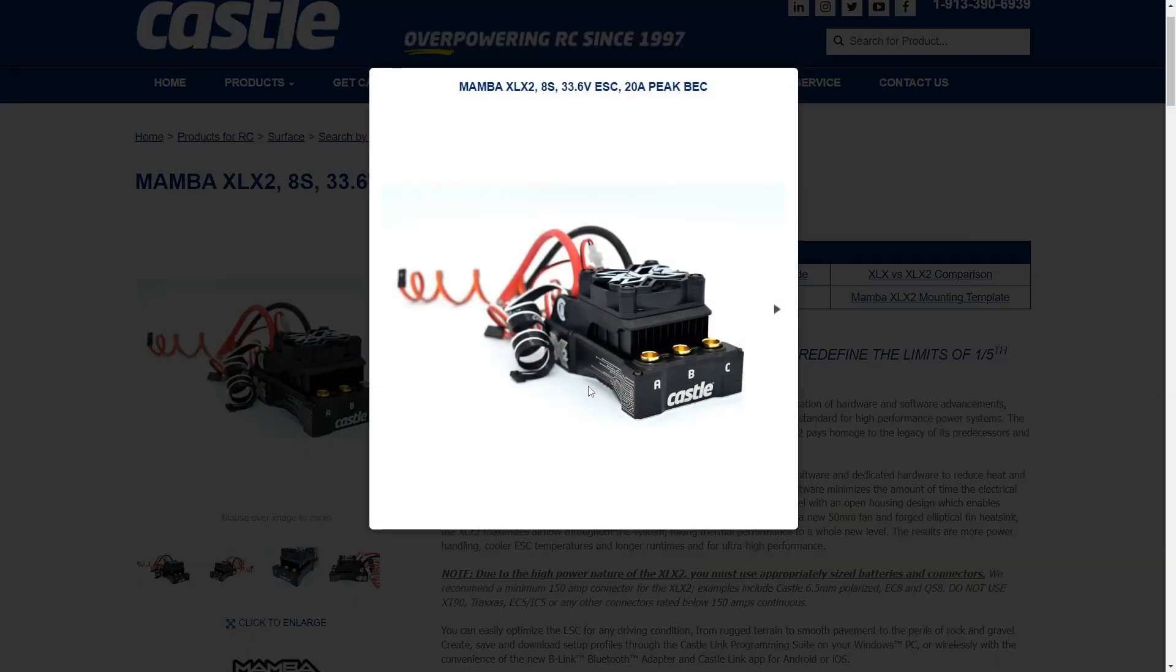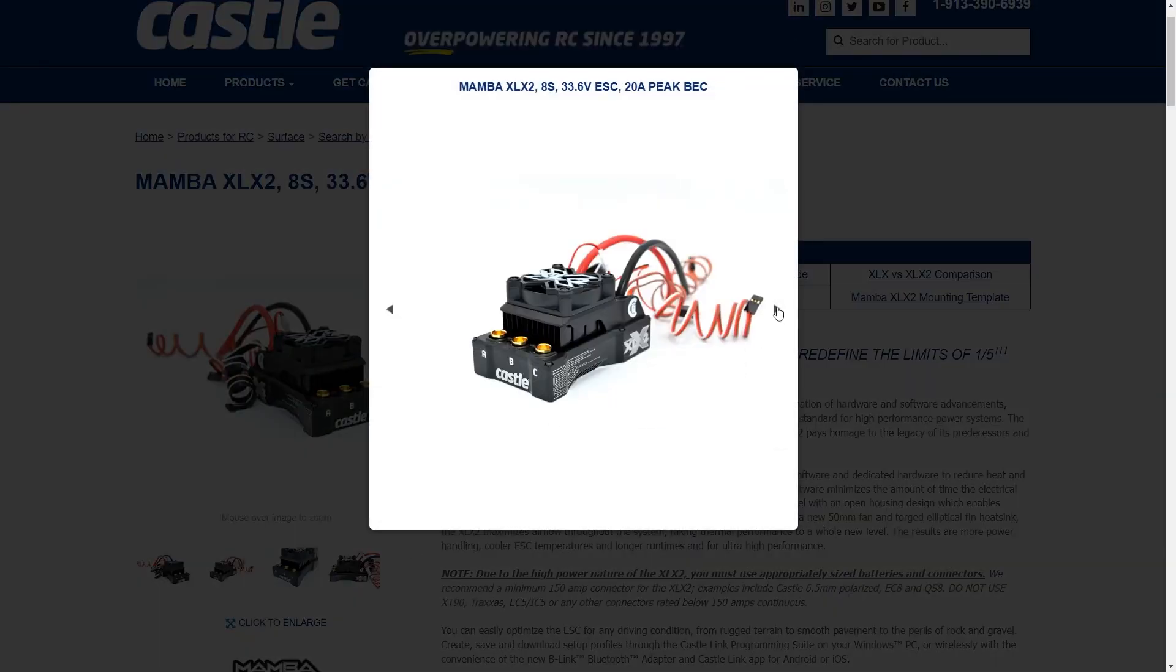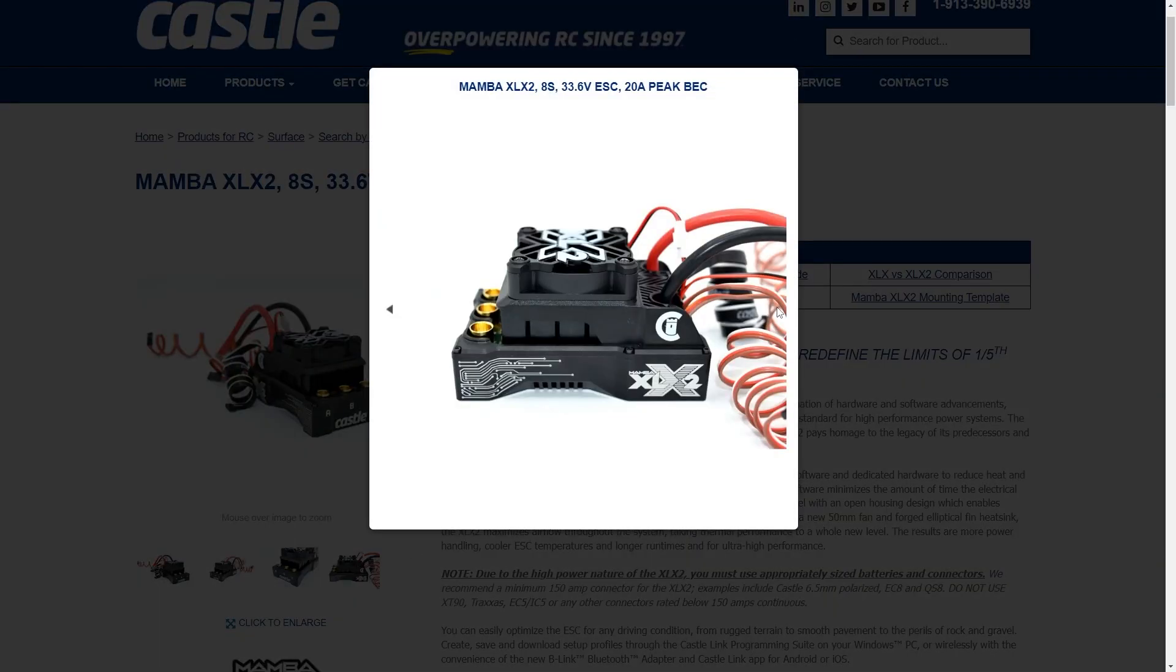In the number two spot we have electronic speed controls, and this kind of goes throughout all of the different radio controlled applications. We are now seeing brushless speed controls that are more powerful than they've ever been before. They're more resilient to things like ripple voltage. Top brand high performance radio controlled electronic speed controls are definitely allowing us to achieve much higher power levels and really taking advantage of those new brushless motors that you can find on the market.